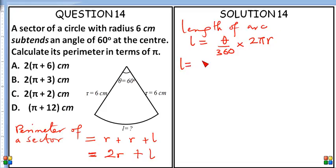Let's put our theta, 60 degrees over 360 degrees, times 2 times π. In terms of π, so don't express π as anything. Leave it as π because the question says in terms of π. So times the radius, the radius is 6.